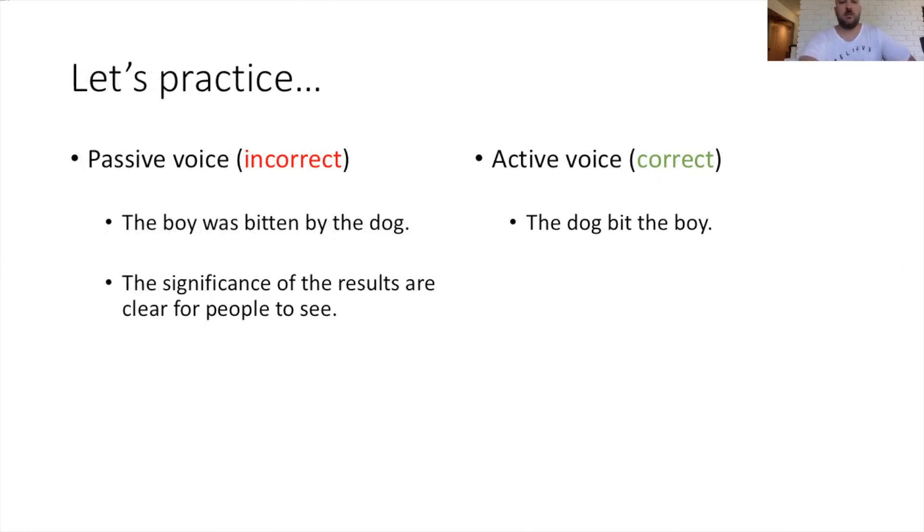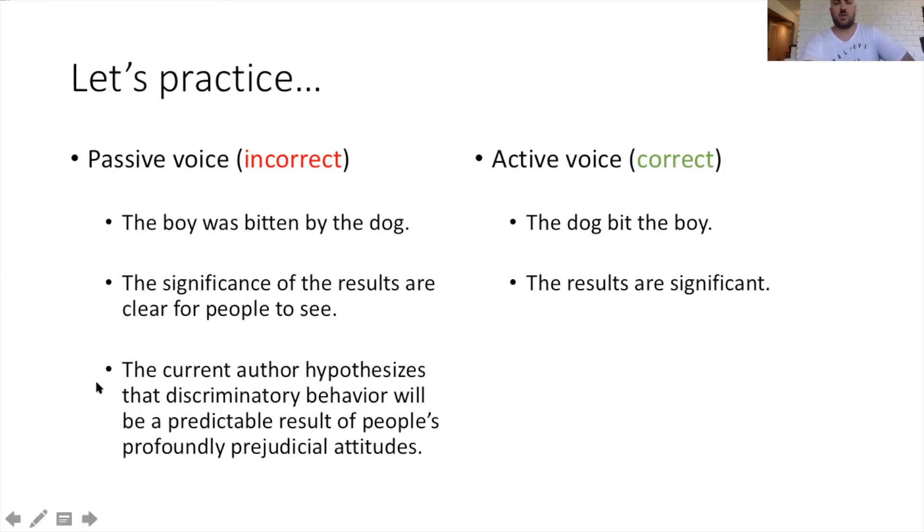But shifting over to more psych science examples: the significance of the results are clear for people to see. Way too verbose. You can trim that down, and if the results are the subject, like the main focus point of the sentence, let them do the action. Results are significant. Or something like the current author hypothesizes that discriminatory behavior will be a predictable result of people's profoundly prejudicial attitudes. That's a terrible sentence. It's way too choppy. And what do you mean? Let's keep it simple. The current author—is that you? If so, then say I. I hypothesize that discriminatory behavior will be a predictable result of people's profoundly prejudicial attitudes. What you're saying is that people's prejudicial attitudes are going to predict their discriminatory behavior. If that's the case, then lead with prejudicial attitudes and let them do the action here. I hypothesize prejudice predicts discrimination. Short, concise, active voice.